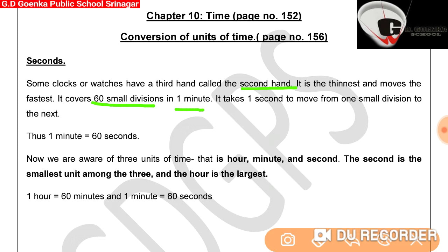We are aware that there are three units of time: hour, minute, and second. The second is the smallest among the three and the hour is the largest. We also know that one hour is equal to 60 minutes and one minute is equal to 60 seconds.